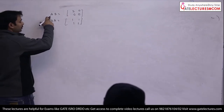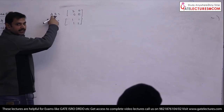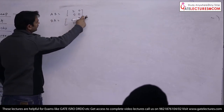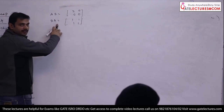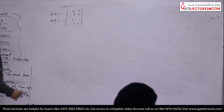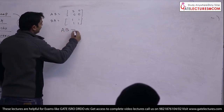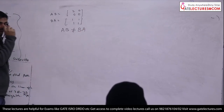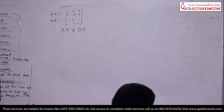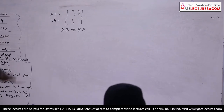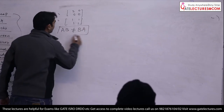So here A is a 2×2 matrix and B is another 2×2 matrix. AB is one matrix, but when you multiply BA it gives a different matrix — 1 1 1 1. So for equality, AB is not equal to BA. In general, multiplication is not commutative.